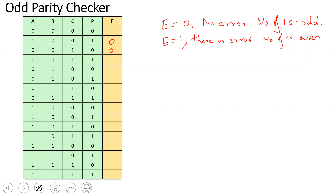Similarly, next row: 0, 0, 1, 1. If you look at the number of ones, that's 2, which is an even number. So I have to get an error — error output is 1. Next row is 0, 1, 0, 0. Number of ones is 1, which is again odd. Next row is 0, 1, 1, 0; the number of ones is 2, which is even.